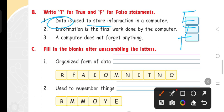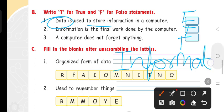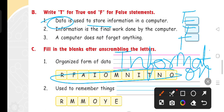Now fill in the blanks after unscrambling the letters. Organized form of data. Now we call this information: I-N-F-O-R-M-A-T-I-O-N. So this spelling is given, information.